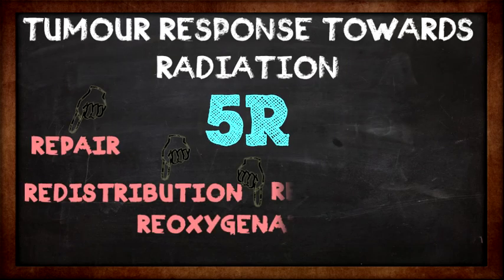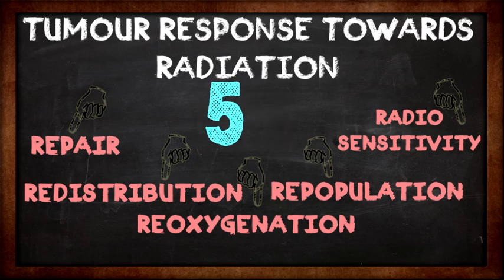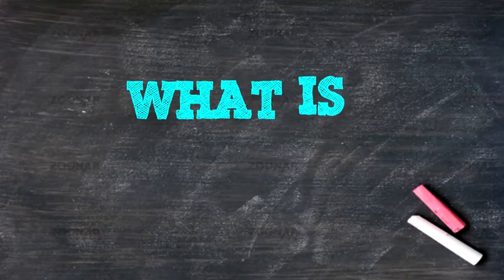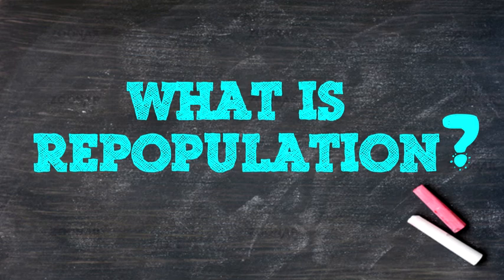The 5 R's are repair, redistribution, reoxygenation, repopulation, and radiosensitivity. Repopulation is actually what happened in the previous video. Let's discuss more on repopulation.